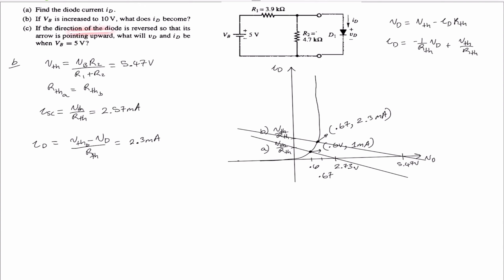For section C, if the direction of the diode is reversed so that the arrow is pointing upward, what are Vd and Id? In this case, current does not flow in the reverse direction — any reverse current is too small to measure, so it's negligible and we call it zero. If the diode is reversed, Vd equals negative Vthevenin. For VB equal to 5 volts, that is negative 2.73 volts. Id is negligible, approximately 0 amps.